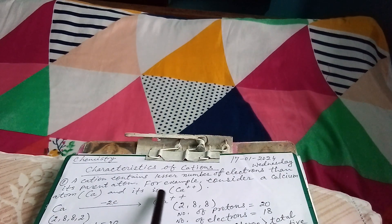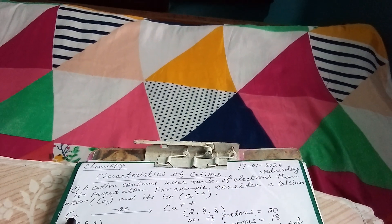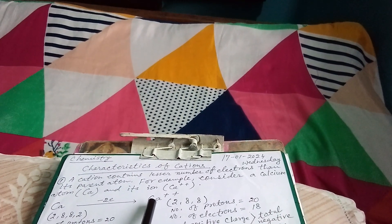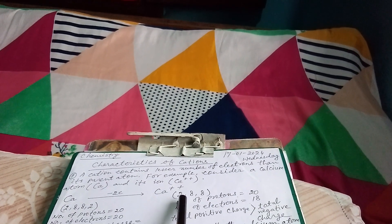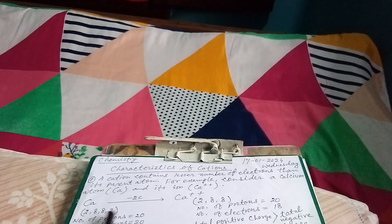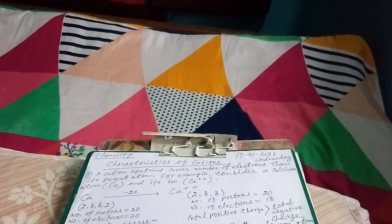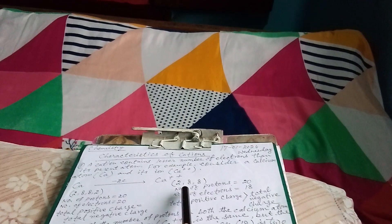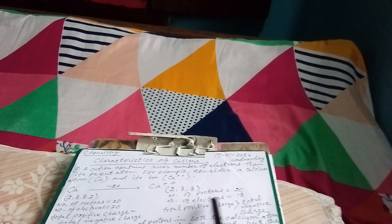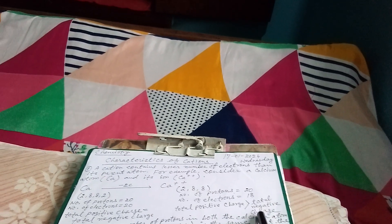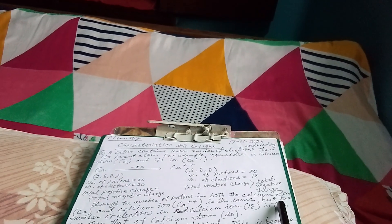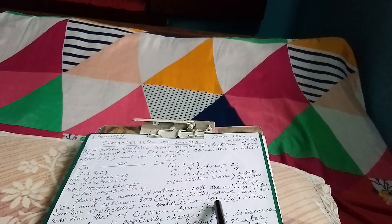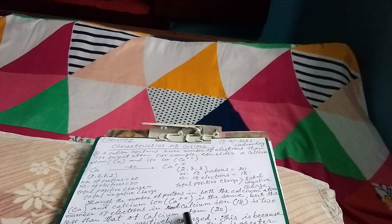Consider calcium (Ca) and its ion Ca²⁺. Calcium loses two electrons to become Ca²⁺. Before losing two electrons, its electronic configuration is 2,8,8,2, and after losing two electrons it becomes 2,8,8. Before losing electrons, the number of protons is 20 and the number of electrons is 20, so total positive charge equals total negative charge. After losing two electrons, the number of protons is 20 and the number of electrons is 18, so the total positive charge is greater than the total negative charge. The number of protons in both Ca and Ca²⁺ is the same, but the number of electrons in the calcium ion is 18, which is two less than that of the calcium atom, which is 20.